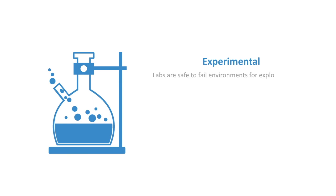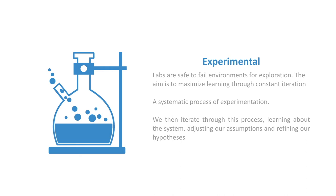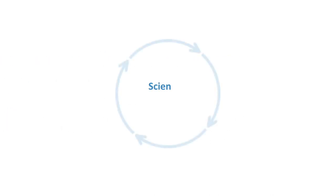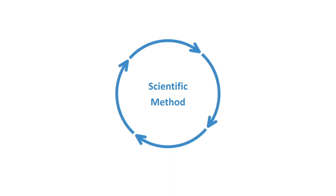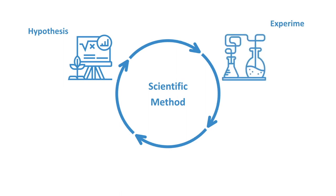We need a systematic method for doing experimentation — it can't just be random exploration. These are safe-to-fail environments for exploration, and the aim is to maximize learning through constant iteration. We iterate through a process of learning about the system, adjusting our assumptions and refining our hypotheses — very much like the scientific method. We need to formulate a hypothesis about what might work or how the system works, then test that hypothesis by doing an experiment and intervening in the system in a safe-to-fail environment.